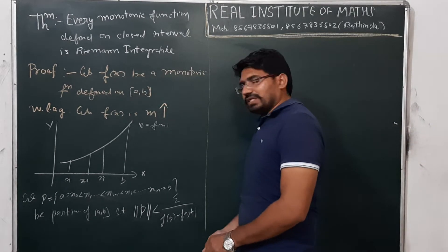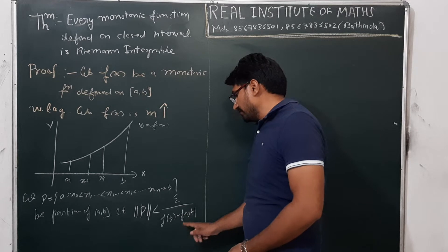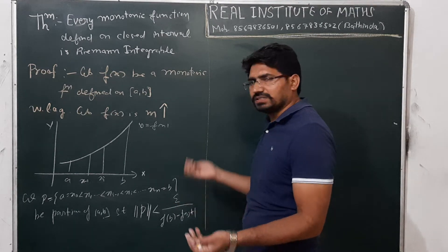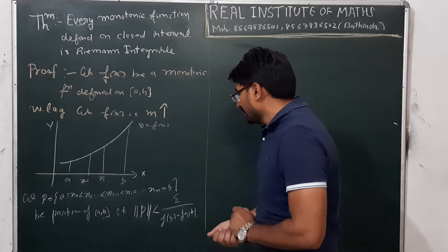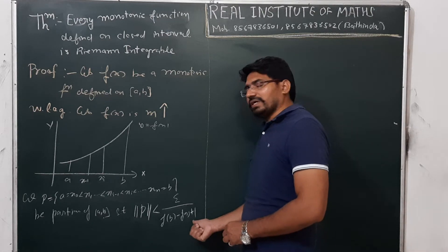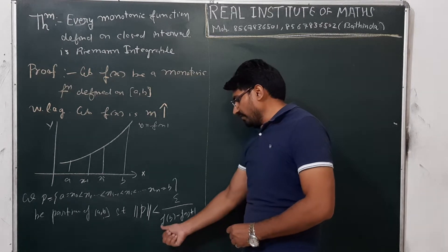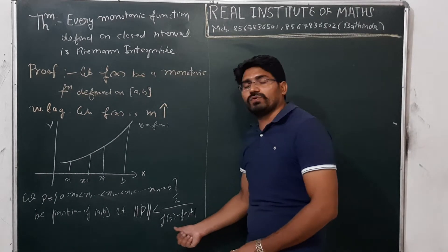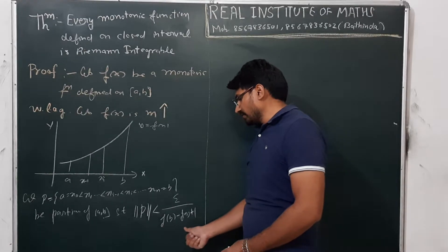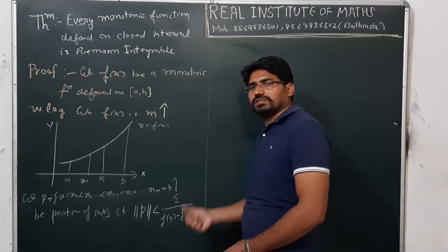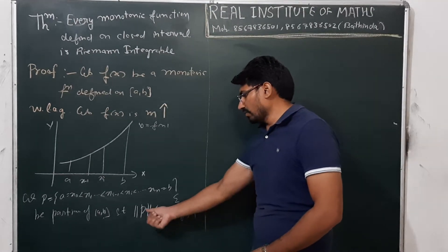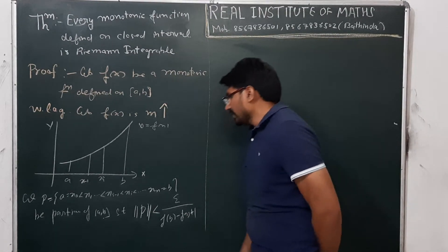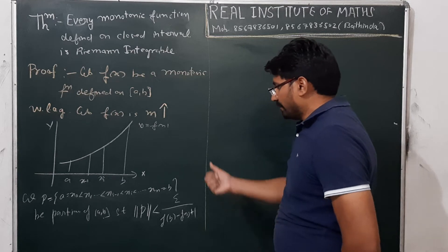The norm of the partition is less than epsilon over f(b) minus f(a) plus 1. Note: we add 1 in the denominator so that if f(b) equals f(a), the denominator is not zero. So we have defined a partition of [a, b].